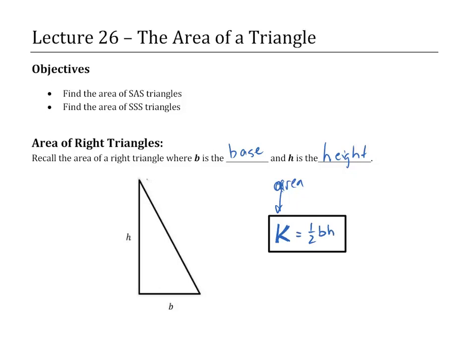It's fairly easy to see where the formula comes from. If I were to draw a line straight across parallel to side B and one straight down parallel to side H, that creates a rectangle. The area of a rectangle is base times height, and since the triangle is one-half of that entire rectangle, the area of the triangle is one-half of the base times height.